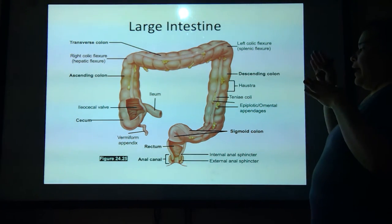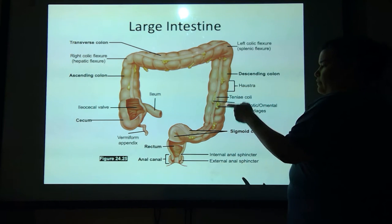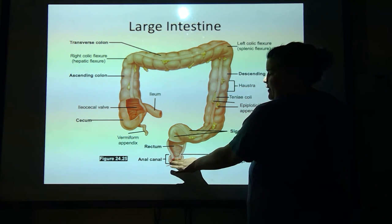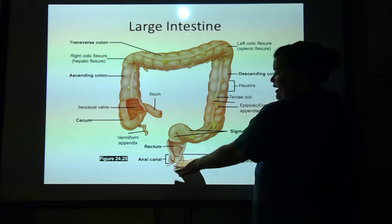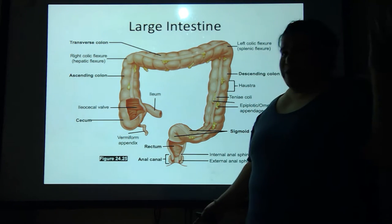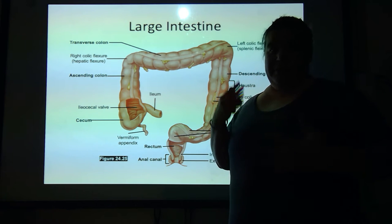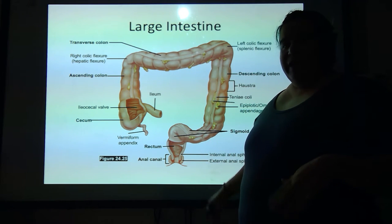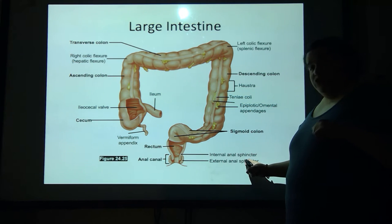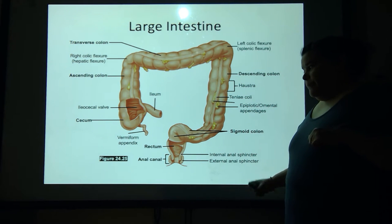As we get to the sigmoid colon, it eventually turns into the rectum, and then finally the anal canal. The anal canal is like two to three centimeters — it's not that much space. But at the anal canal, we have two sphincters: an internal anal sphincter and an external anal sphincter.